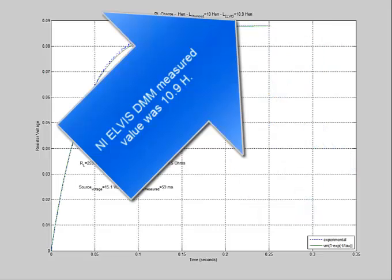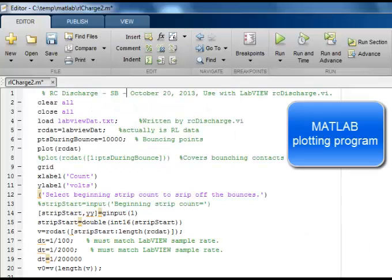NI Elvis digital multimeter measured value was 10.9 Henrys. This is a portion of the MATLAB plotting program.